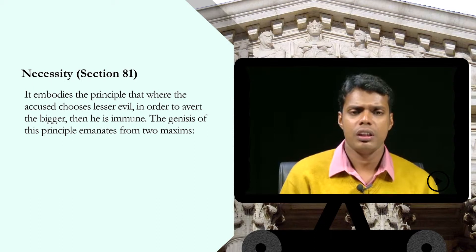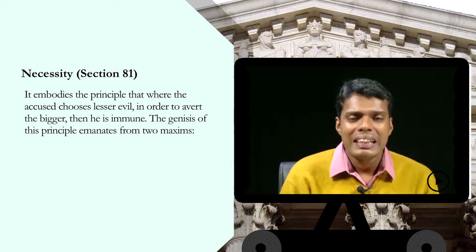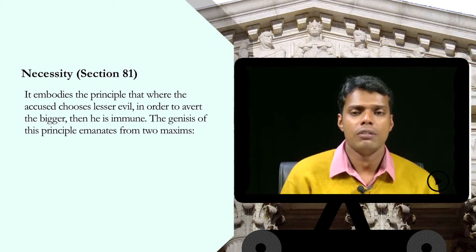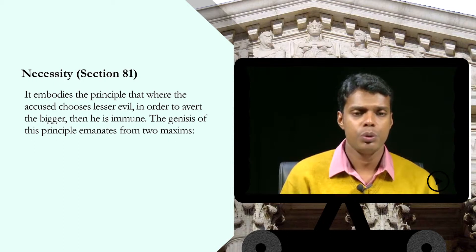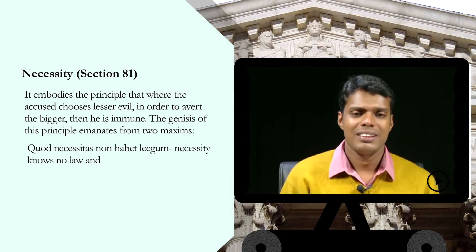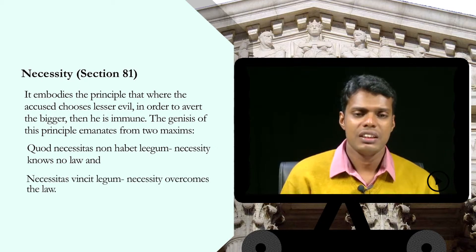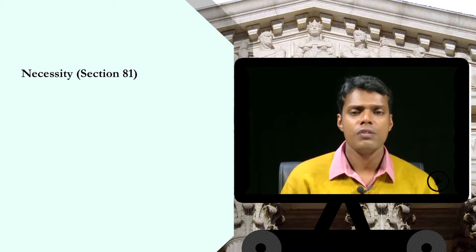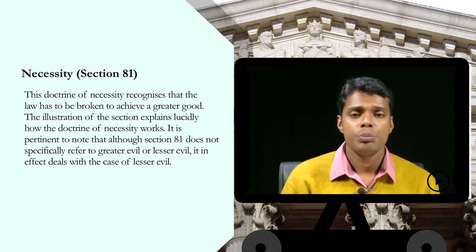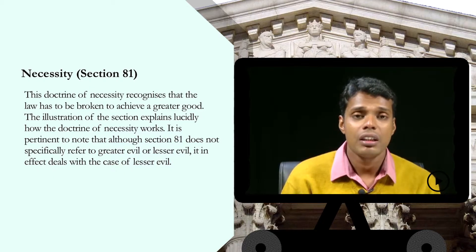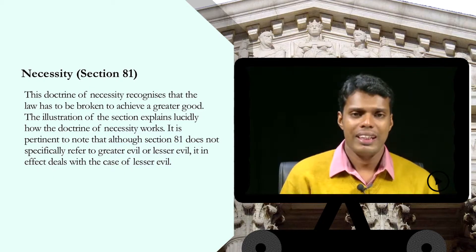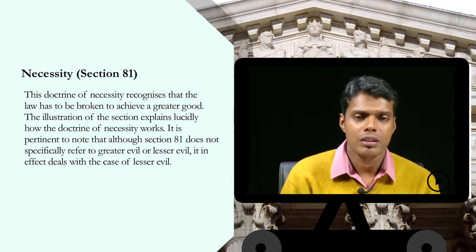Section 81 is based on the principle that where the accused chooses the lesser evil in order to avoid the bigger, then he is immune. The genesis of this principle emanates from two maxims: 'necessitas non habet legem,' meaning necessity knows no law, and 'necessitas vincit legem,' meaning necessity overcomes the law. This doctrine of necessity recognizes that the law has to be broken to achieve a greater good. The illustration of the section explains lucidly how the doctrine of necessity works.